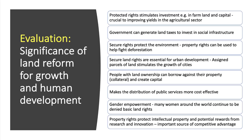Once governments know who owns the land, they can generate land taxes to invest in social infrastructure. One of the features in many lower and middle income countries is that total taxation as a share of GDP is extremely low compared to advanced industrialised countries. Part of the solution is to assign land ownership so that those who own the land can pay taxes. Secure rights can also help protect the environment, so property rights can be important in the battle against environmental market failure — for example, property rights could be used to fight deforestation.